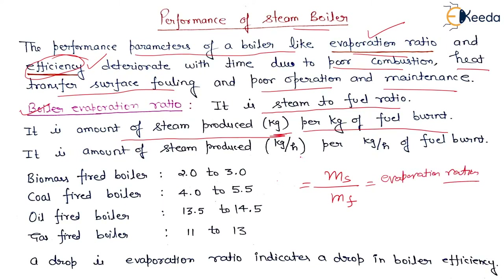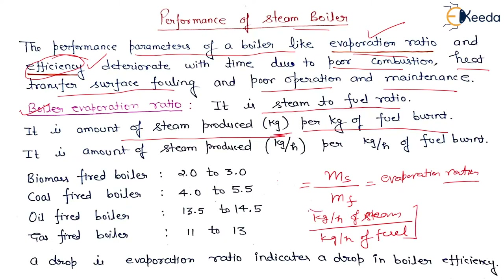If we calculate in terms of mass flow rate, it will be kg per hour of steam divided by kg per hour of fuel. This is also the evaporation ratio.